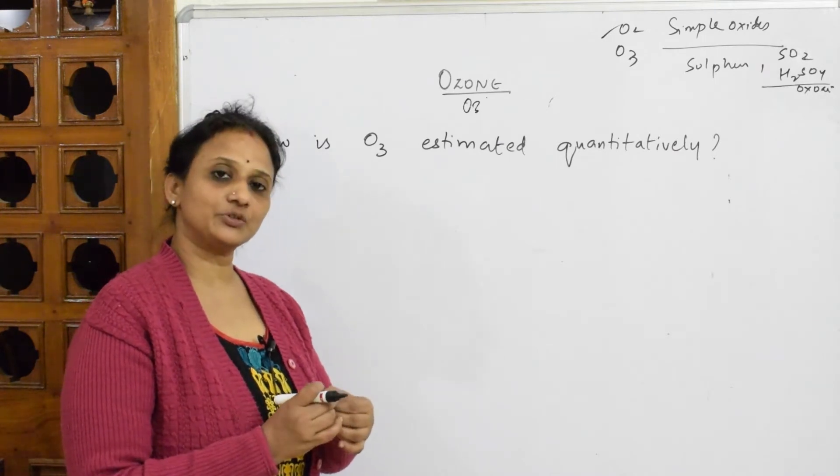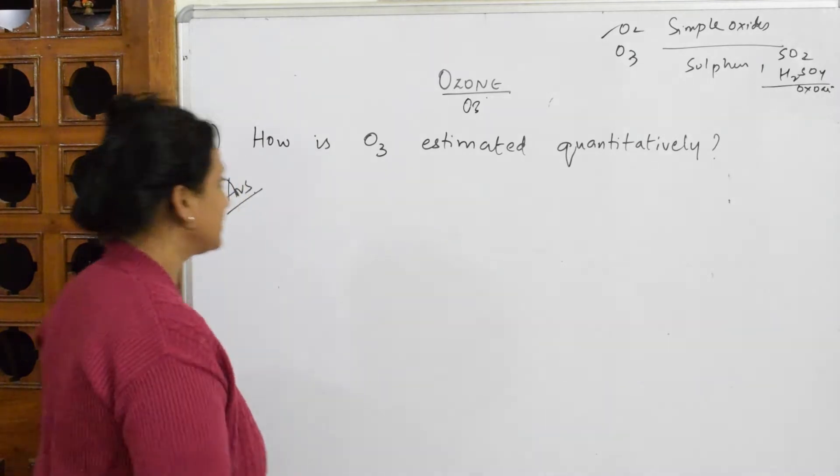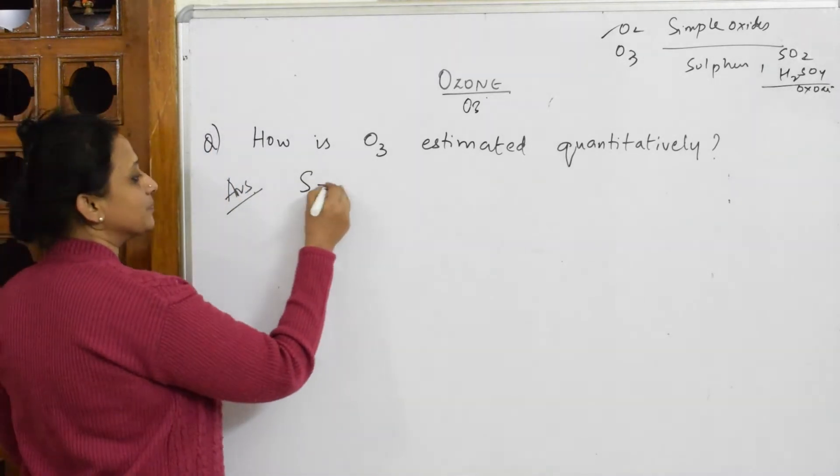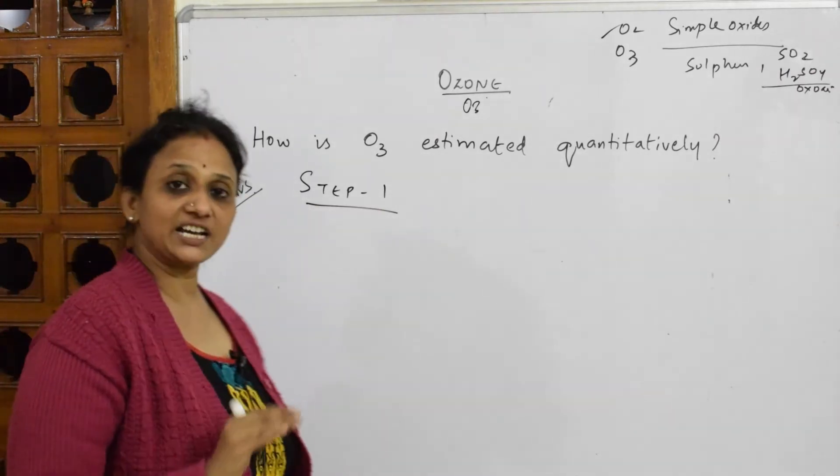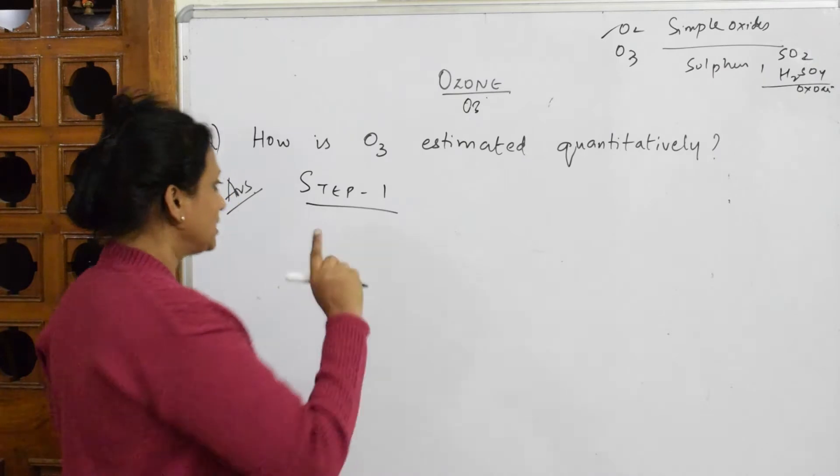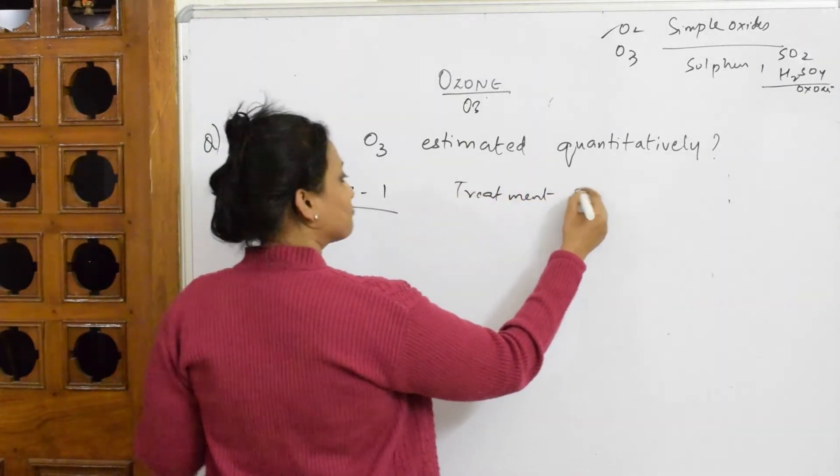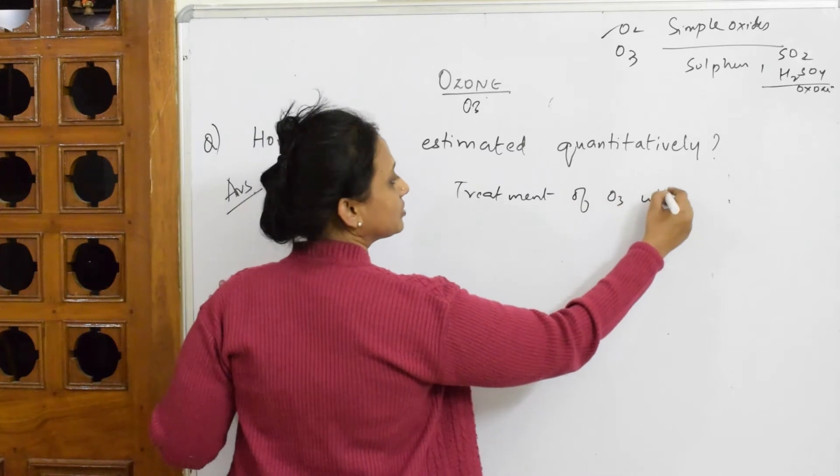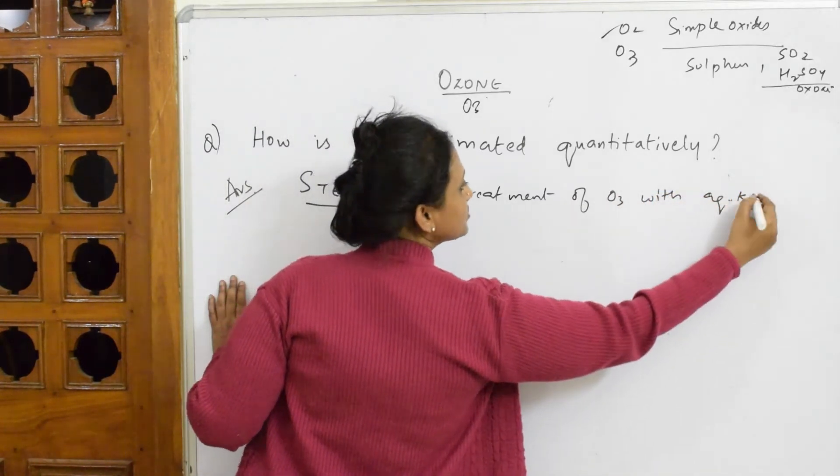Here we are going to show the estimation of ozone in two steps. First in step one, an important thing to remember: your ozone is treated with potassium iodide. This is the first important reaction we have already learned in the preparation. Step one is treatment of ozone with an aqueous solution of potassium iodide, that means water plus iodide.